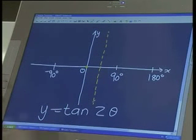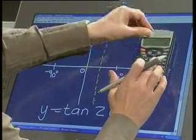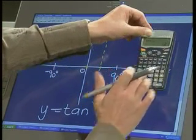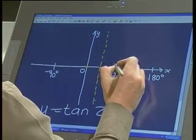If I type 90 in, I'm going to go tan, open the bracket, 2 times 90, close the bracket, equals. I get 0.